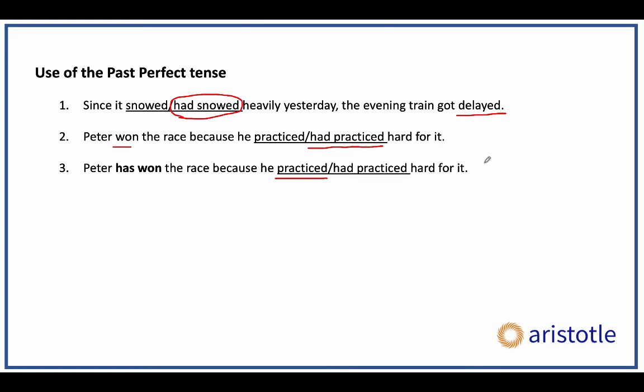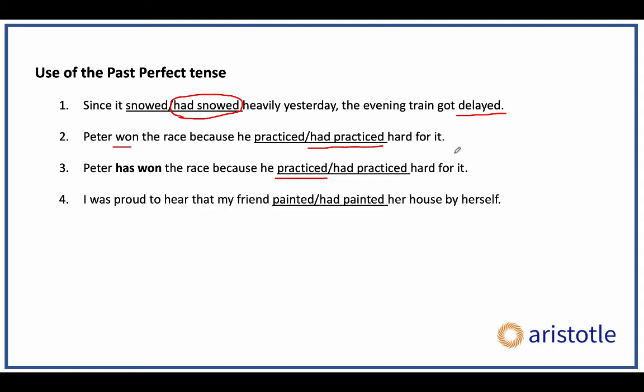So past perfect only comes in if you already have a simple past tense somewhere else in the sentence and this event took place before that simple past. Otherwise, you don't need the past perfect tense. That's one way of figuring out whether to go with past perfect — check the rest of the sentence for a simple past tense.